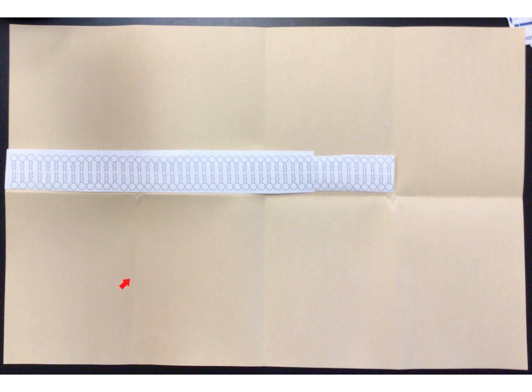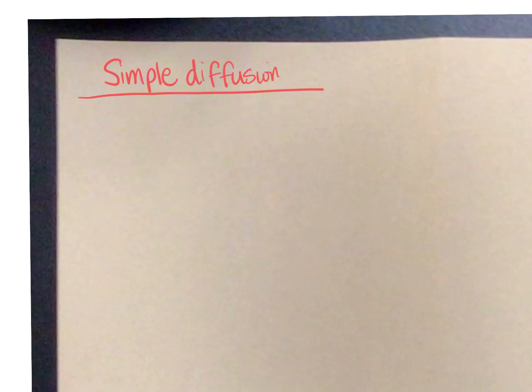We're going to be writing in this first and second column today. Let's get started. So in this first column right here, we're going to be talking about simple diffusion. I'm doing this in red because I had colored in the phospholipid tails, which are hydrophobic or nonpolar, in red. I'm going to do the same thing for simple diffusion because simple diffusion is going to apply to substances and molecules that are small and nonpolar.